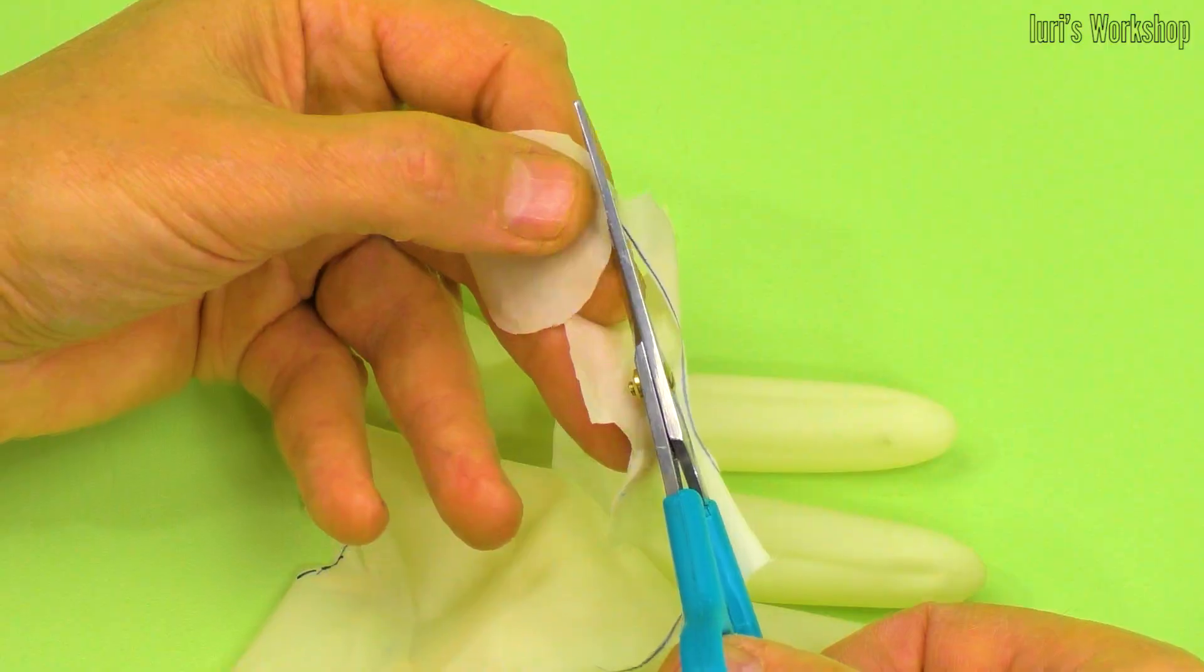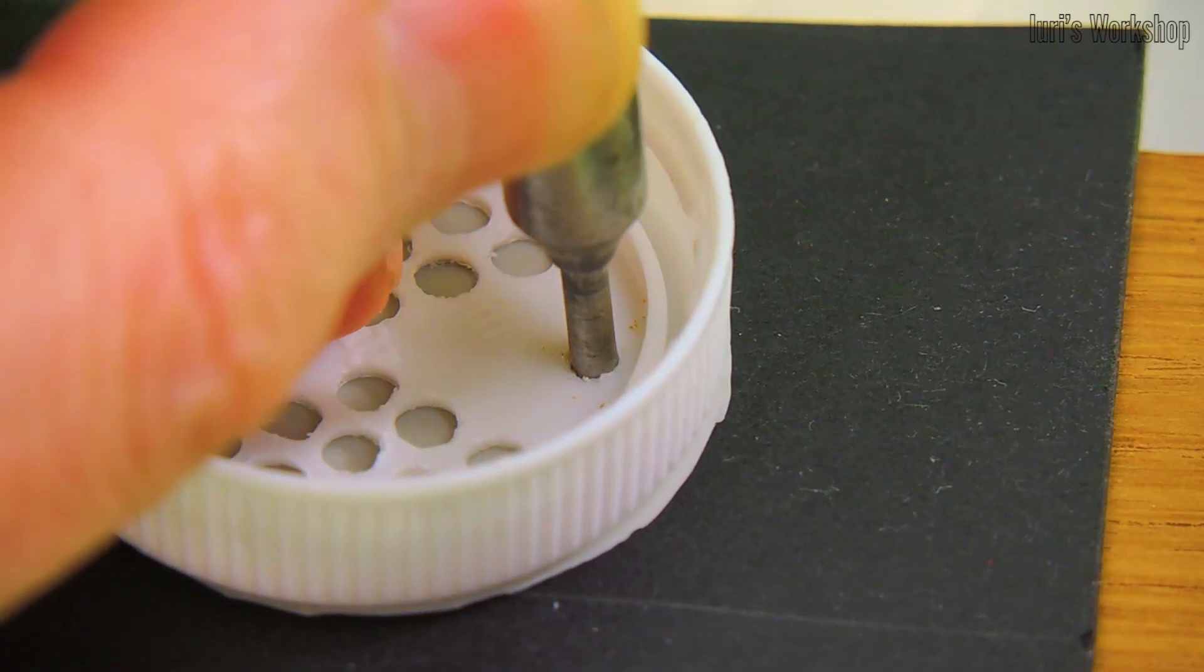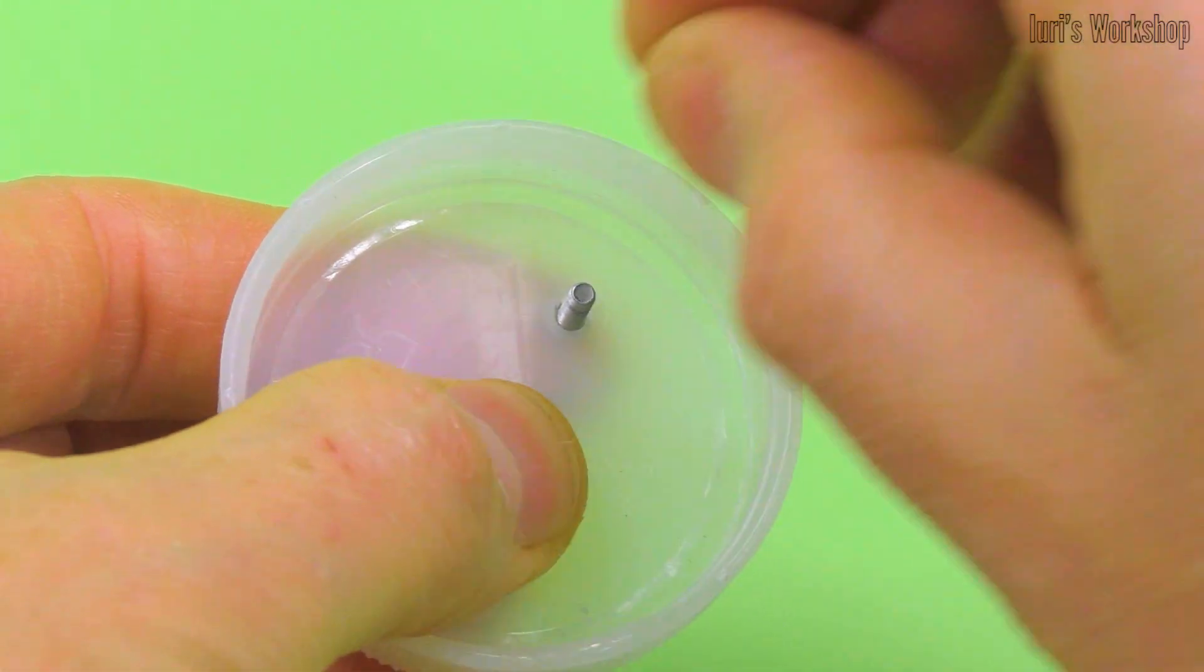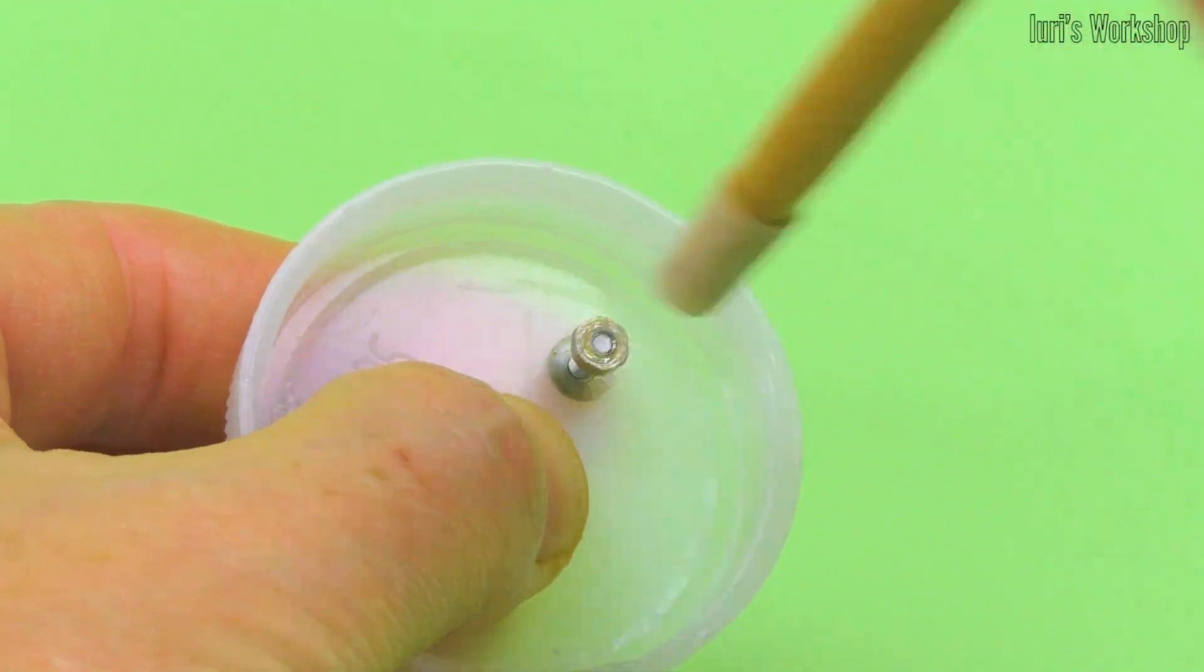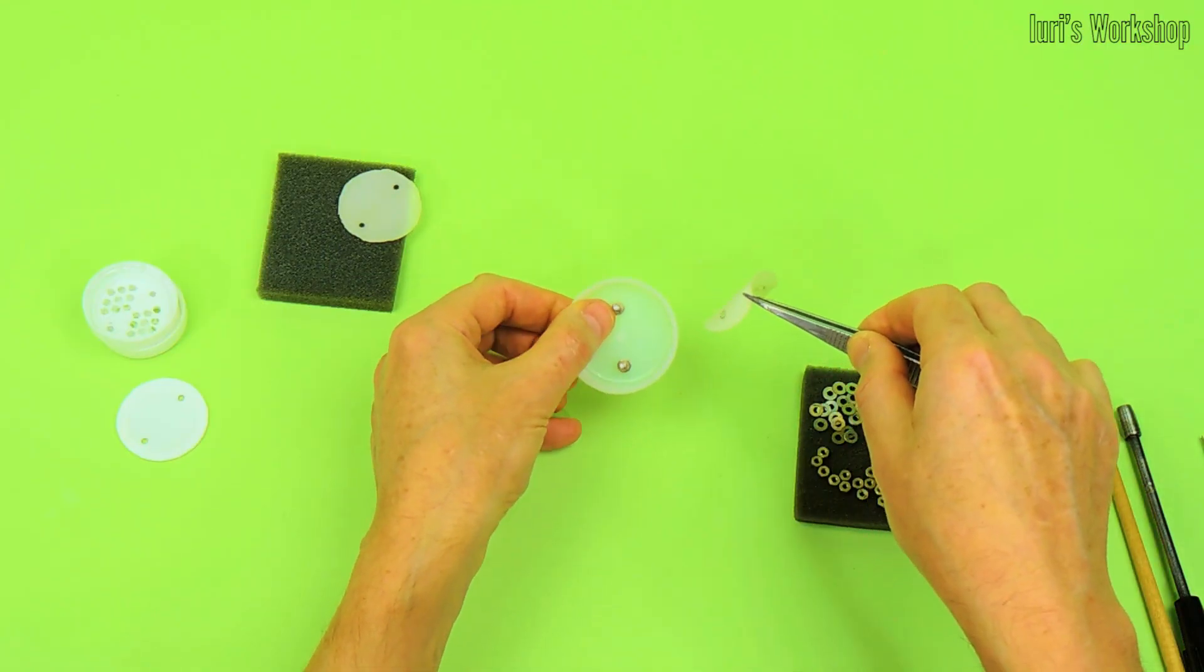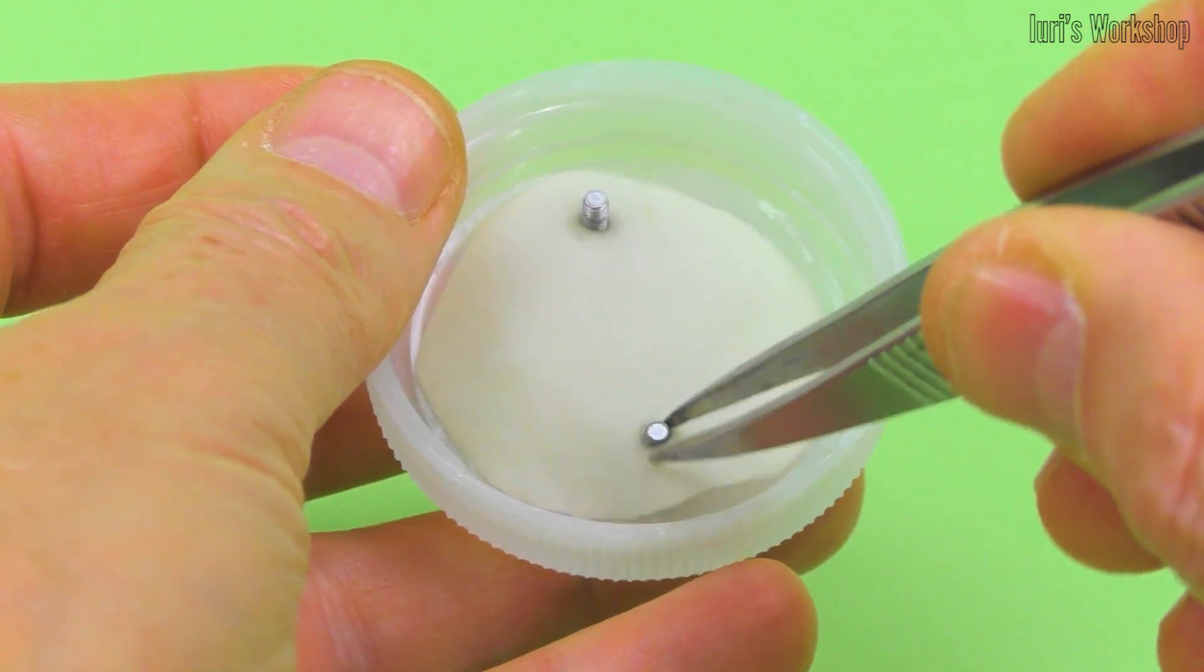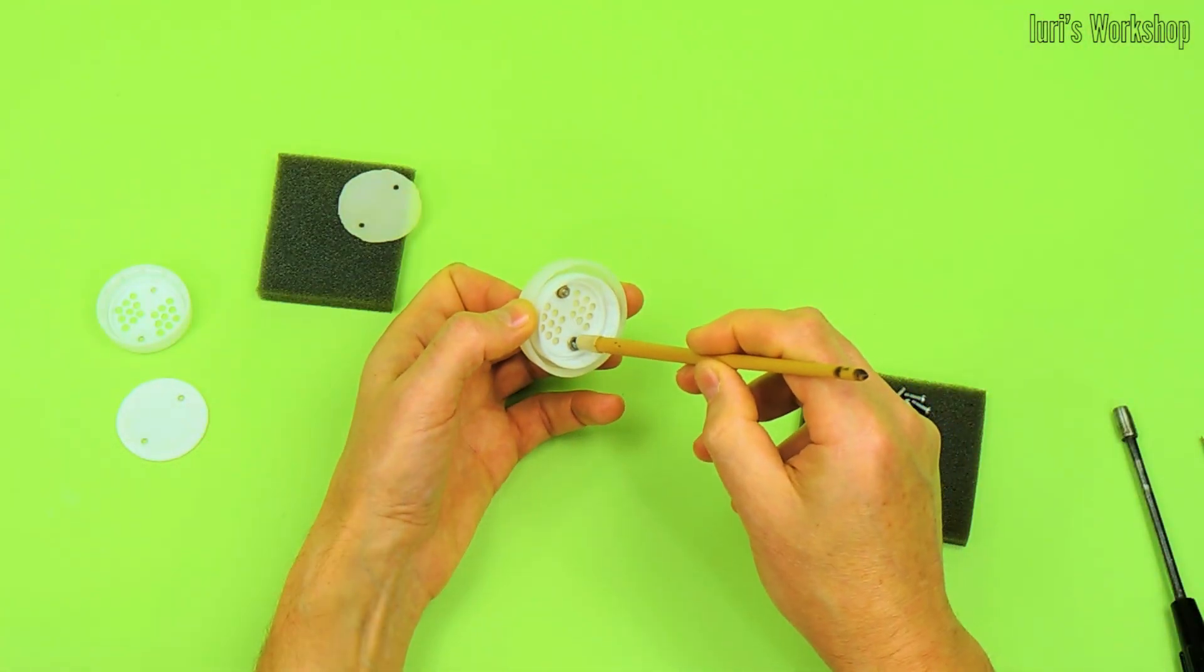I've made the valve membranes from a smooth surgical glove. Now you can see the process of assembling the exhaust valve through which the exhaled air passes. For assembly, I used screws with a diameter of 2.5 mm, but you can choose the screws at your disposal.